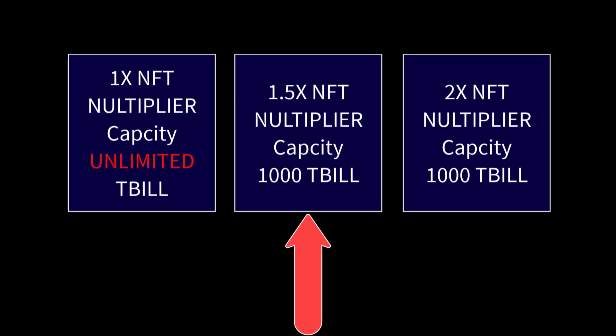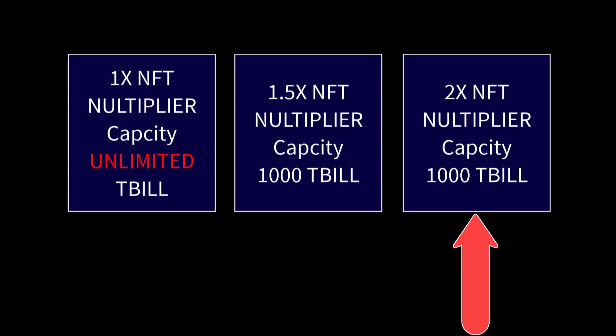equal to the last 24 hours prior to its minting of the amount of liquidity that you were providing. So if it was a thousand T-Bill that you were providing liquidity with, then that 1.5x NFT when it is minted will have a maximum capacity of a thousand T-Bill. The same holds true when after a year your 2x NFT multiplier is minted — it too will have a capacity equal to the amount of liquidity you were providing in the 24 hours prior to it being minted.